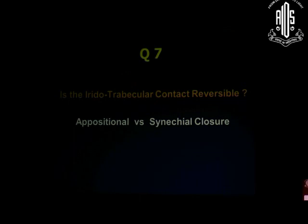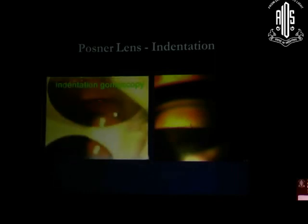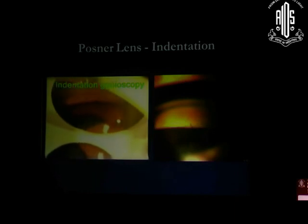Coming to the other critical question: you have diagnosed that the trabecular meshwork is not visible. You have to answer whether this contact between the iris and trabecular meshwork is reversible or irreversible — by irreversible I mean there is synechial closure between the iris and angle structures. See this patient carefully: angle structure was not visible in primary position. Now you ask the patient to look into the mirror — the angle opens up, the scleral spur becomes visible. So in primary position the angle was appearing closed; on manipulation it has opened up. This is appositional closure. This can be done with the Posner or Zeiss lens using indentation gonioscopy — this cannot be done with Goldman-type lenses.